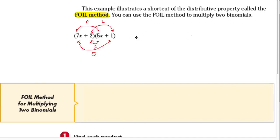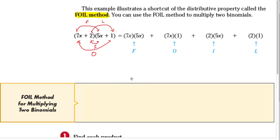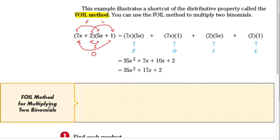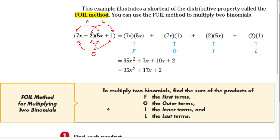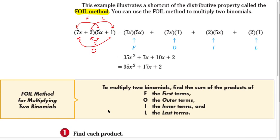The inner terms are 2 and 5x, and the last terms are 2 and 1. Following FOIL: first = 7x·5x = 35x²; outer = 7x·1 = 7x; inner = 2·5x = 10x; last = 2·1 = 2. You combine outer and inner because they are like terms: 7x + 10x = 17x. So you still get 35x² + 17x + 2. Note: the FOIL method only works with two binomials.